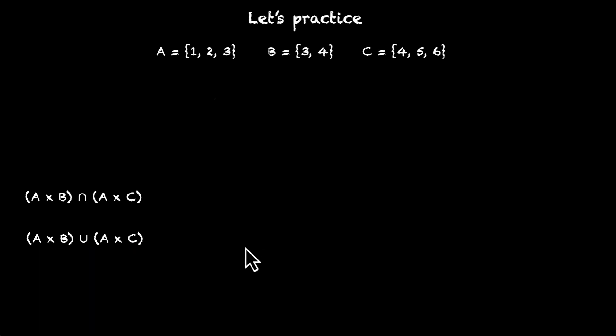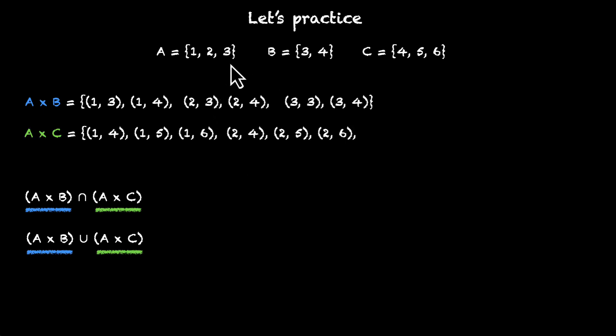For the next two, we have A times B and A times C. Let's do them first. A times B will have (1,3), (1,4), (2,3), (2,4), (3,3), and (3,4). A times C will be (1,4), (1,5), (1,6), (2,4), (2,5), (2,6), (3,4), (3,5), and (3,6). This is your A times C.